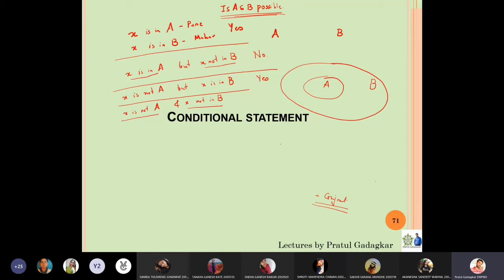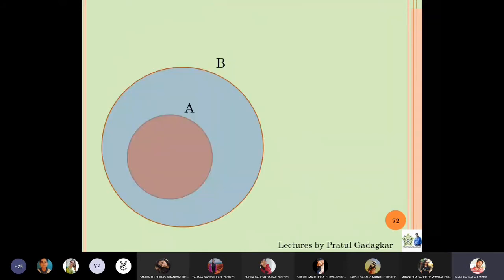The question to always ask yourself is: can it happen that the first set is a subset of the second set? For case one the answer is yes, for case two — if x is in A but not in B — it is not possible, so the answer is no. For cases three and four the answer is yes. This is the reason we looked at this particular Venn diagram.